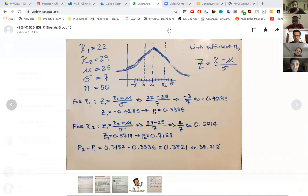And again, we do that for z2, which will come out to 29 minus 25 divided by 7 to give us 4 over 7.